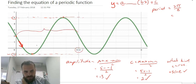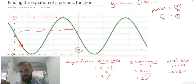So the period is from 0 to pi on 2. So the period is pi on 2. That equals 2 pi over b.